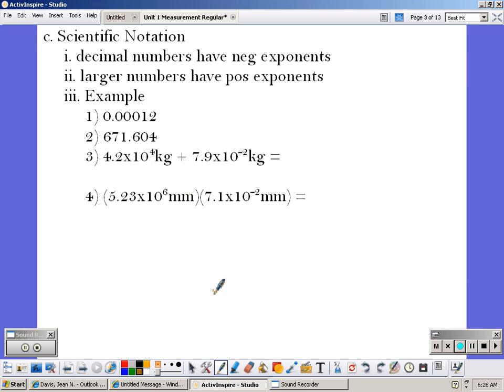Scientific notation. If the exponent is negative, then that means my number is a decimal number. In other words, it's less than one. If it's a large number, it would have a positive exponent, which means it's greater than one.